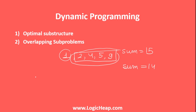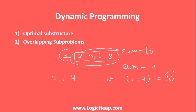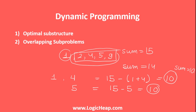The next property is overlapping subproblems. In this same problem, if I pick 1 and then I pick 4, then 15 minus (1 plus 4) equals 10, so the problem reduces to sum equal to 10. Or, if I had picked 5 instead, then 15 minus 5 is also equal to 10. So you are getting the same subproblems again and again. Thus, it has the overlapping subproblems property.